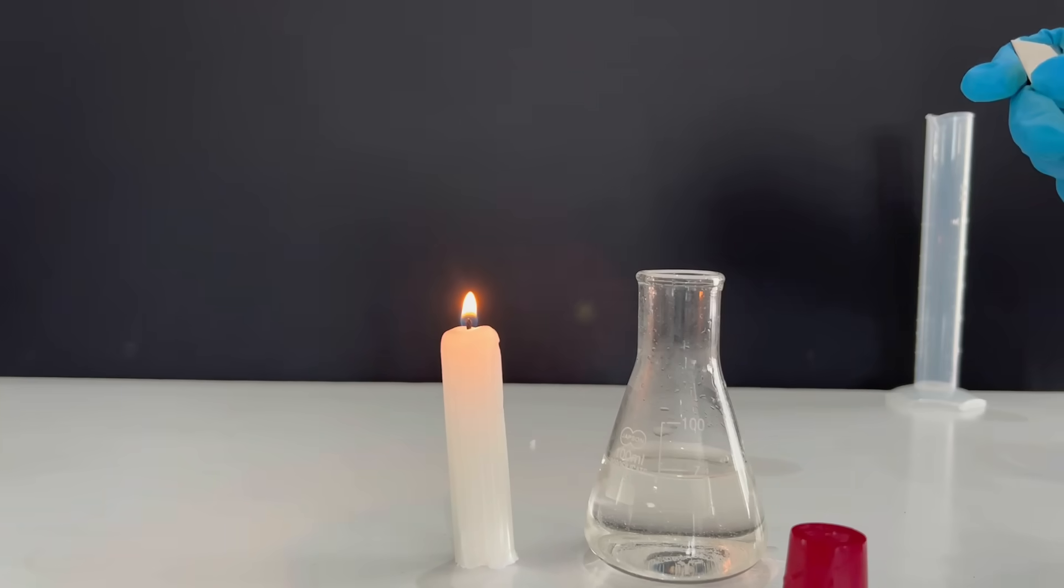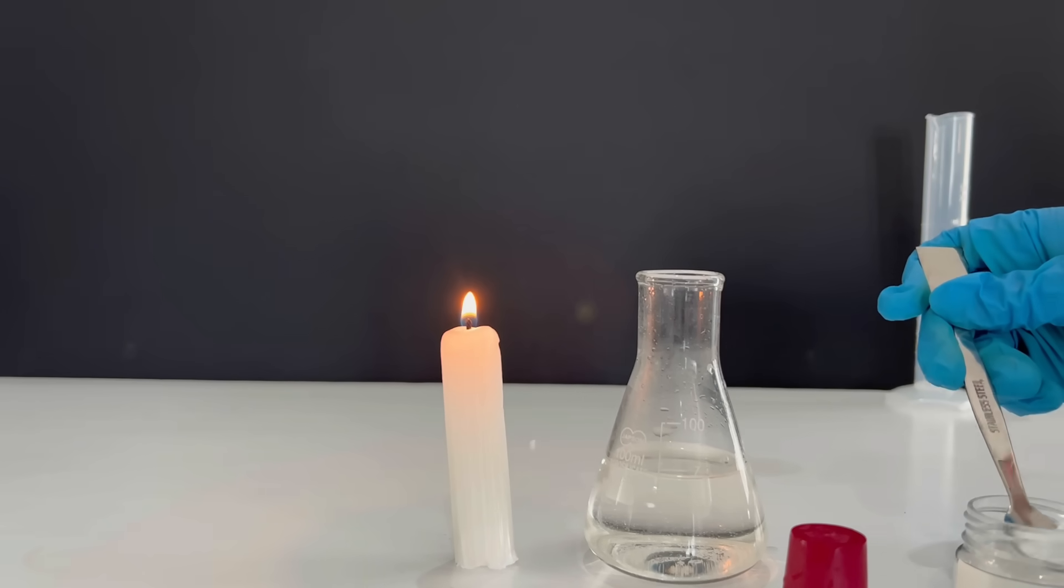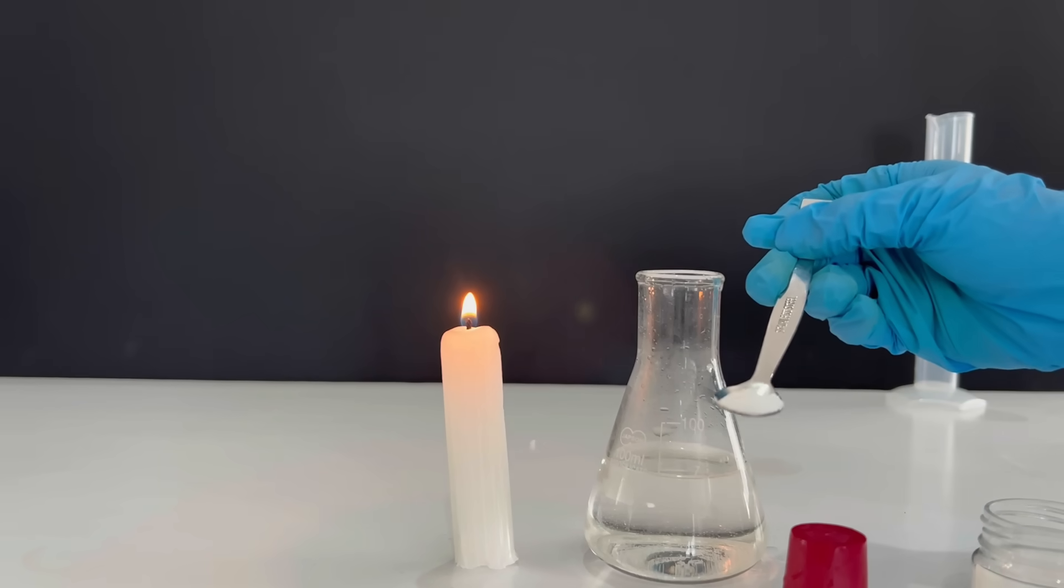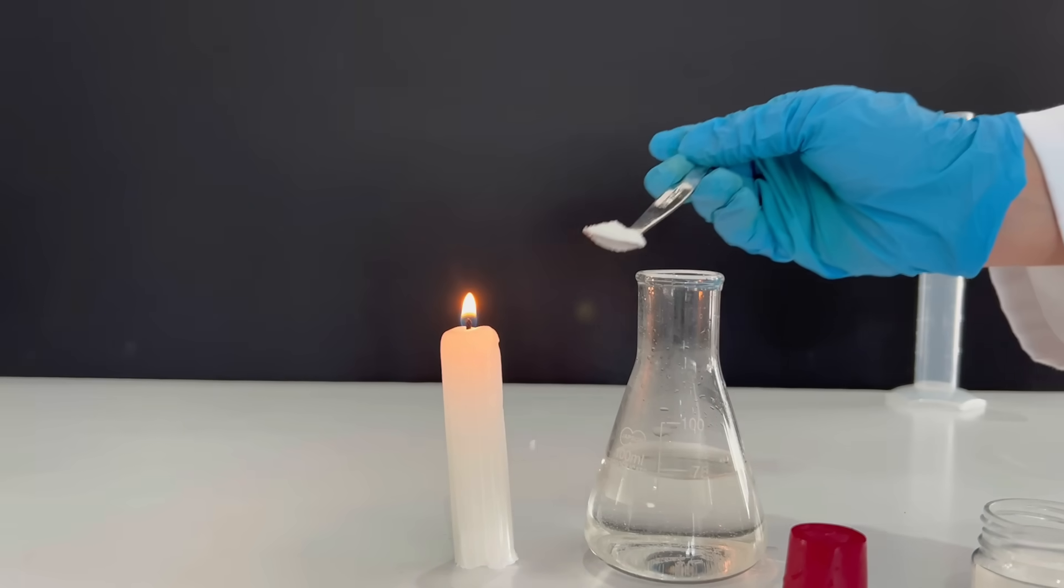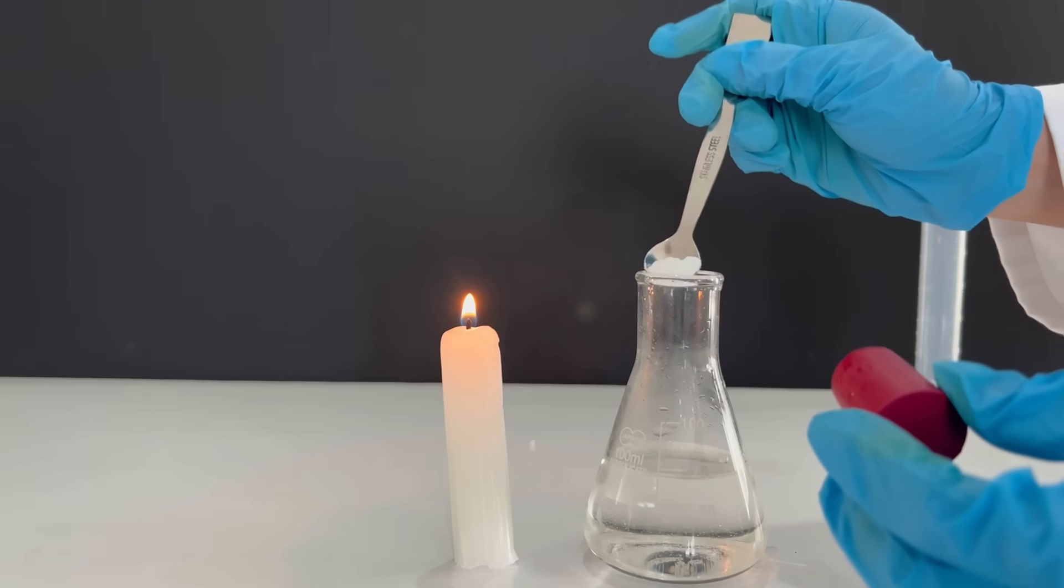Let's add our half a spatula of sodium bicarbonate into the Erlenmeyer flask that is filled with acetic acid and water. Remember to have your stopper ready. We'll add this and then we'll close it directly after that.